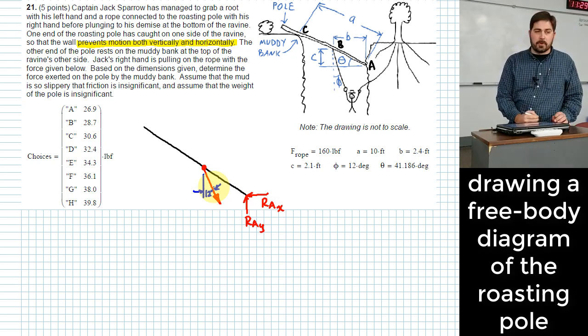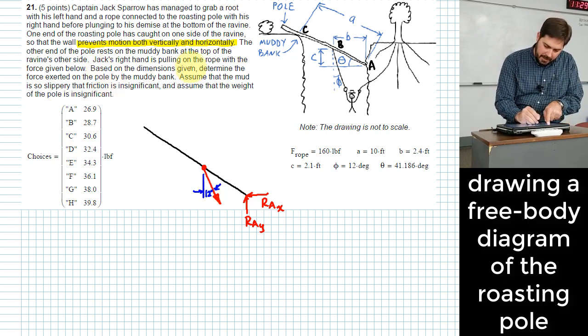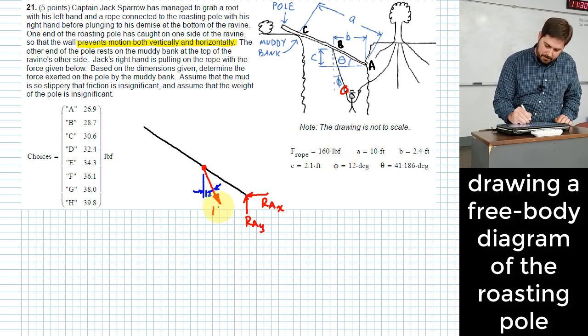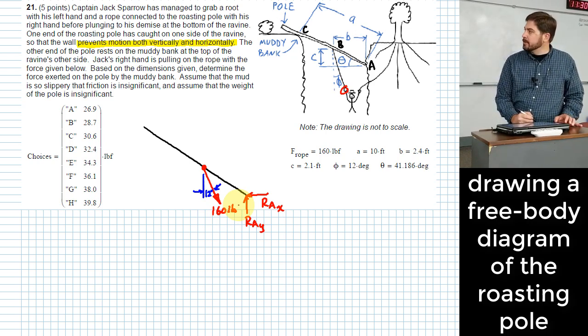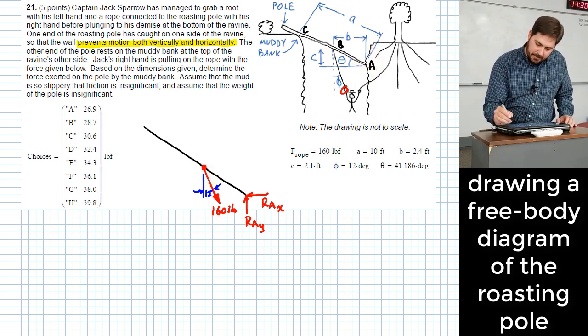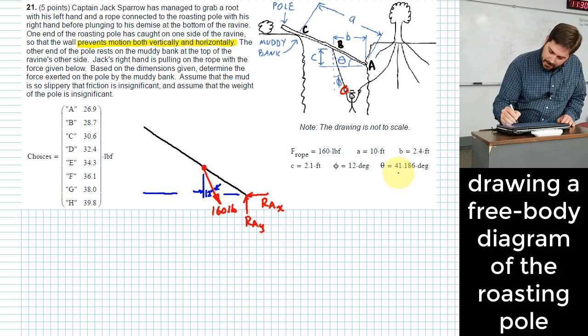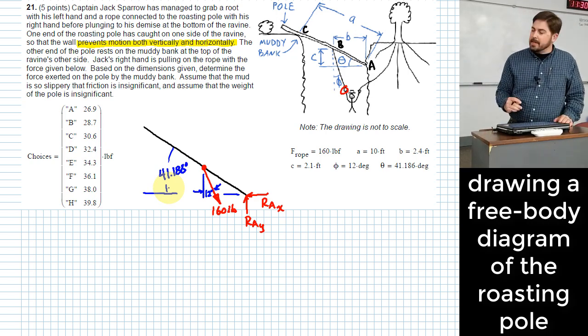Do I know anything else about that force? It says Jack's right hand is pulling on the rope with the force given below. So this is his right hand right here because he's looking at us. So it gives us 160 pounds. Okay. Anything else that I know here? Angle. Okay. So we know the angle that this whole pole kind of thing is at relative to horizontal. So maybe I'll show that right over here. We'll say 41.186 degrees. It's very specific.